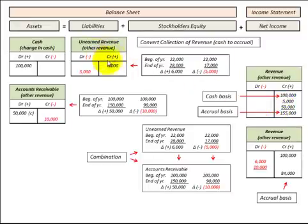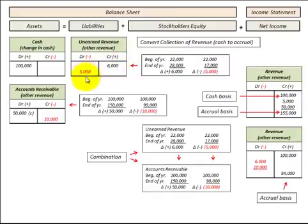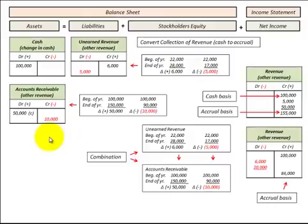With our accrual system, we set up two accounts. Our unearned revenue, which is a liability, and our accounts receivable, which is an asset. Unearned revenue is where we receive cash payment in advance from our customer before we provide any goods or services to them. Accounts receivable is where we provided some goods or services to our customer, but we don't get paid until later.